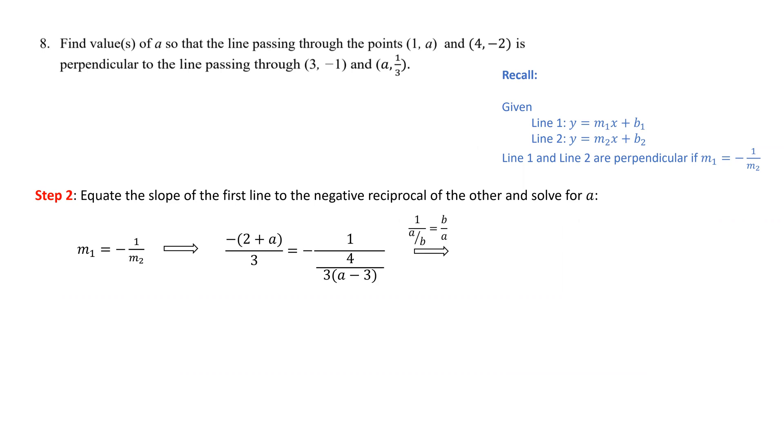We know that 1 over a fraction flips the numerator and denominator. So we get -(2 + a)/3 on the left-hand side and -3(a - 3)/4 on the right-hand side.